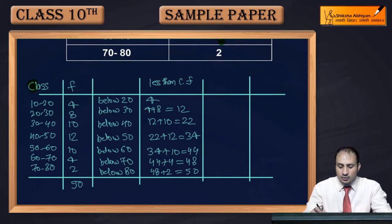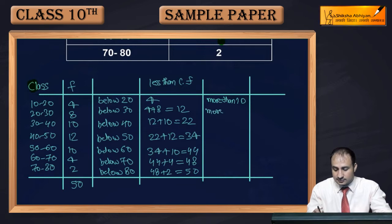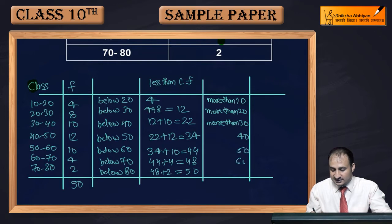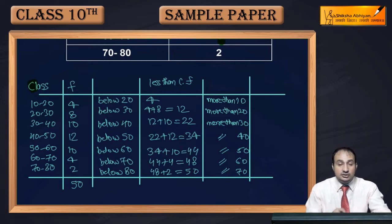After this, we will write here for upper class, more than type. So here we will say for more than 10, after this more than 20, more than 30, then after this 40, 50, 60, 70. So this is done for more than type. Now for more than type, what we do is more than 10, so all frequencies will be there, so here total frequency 50 will come. After this, subtract 4 from 50, so more than 20, meaning what is more than 20, leaving this 4, everything else, meaning subtract 4 from 50, so 46.